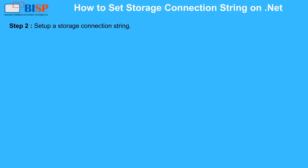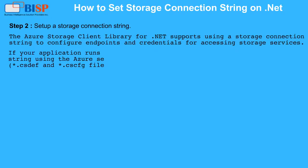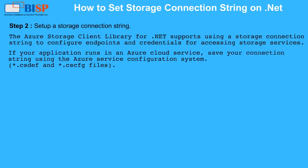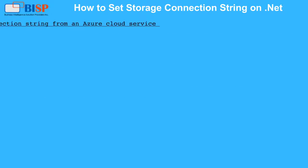Step 2: Set up a Storage Connection String. The Azure Storage Client Library for .NET supports using a storage connection string to configure endpoints and credentials for accessing storage services. If your application runs in an Azure cloud service, save your connection string using the Azure service configuration system. If your application runs on Azure virtual machines, or if you are building .NET applications that will run outside of Azure, save your connection string using the .NET configuration system.